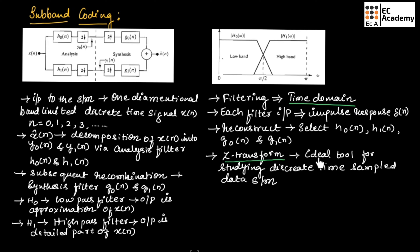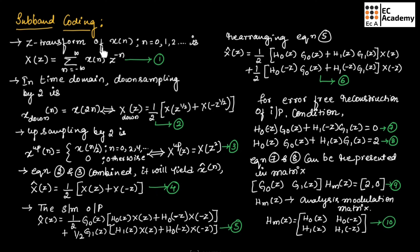The z-transform is an ideal tool for studying discrete-time sampled data systems. Consider the z-transform of input sequence x(n), denoted x(z), which is equal to the summation from n = −∞ to ∞ of x(n)·z^(−n). In the time domain, downsampling is done by 2, so x_down(n) can be written as x(2n).